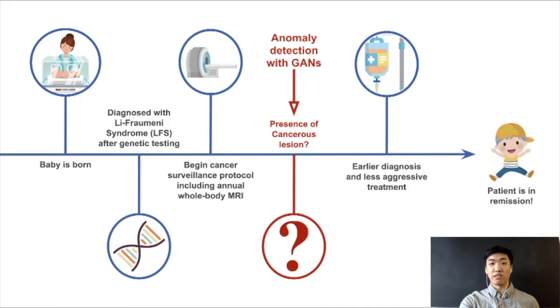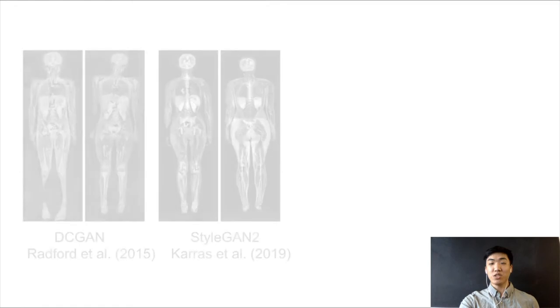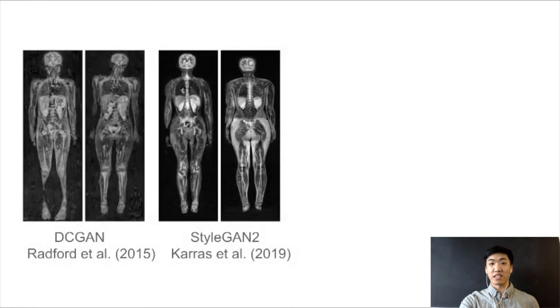To overcome these issues, we augment a set of real whole-body MRI images using four GAN architectures, and reformulate the problem as anomaly detection. We show that the StyleGAN2 architecture generates more realistic images, and in our extended abstract we demonstrate that domain-Fréchet distance is a more appropriate metric than Fréchet inception distance when comparing the quality of generated images.